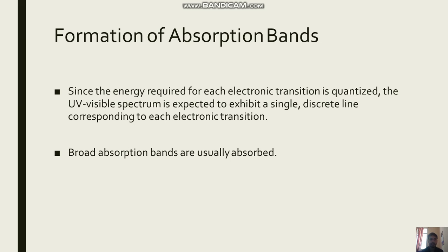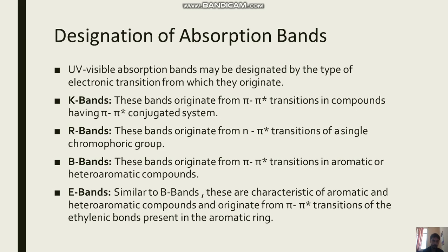Firstly we will see the formation of absorption bands. Since the energy required for each electronic transition is quantized, the UV-visible spectrum is expected to exhibit a single discrete line corresponding to each electronic transition. However, broad absorption bands are usually observed.